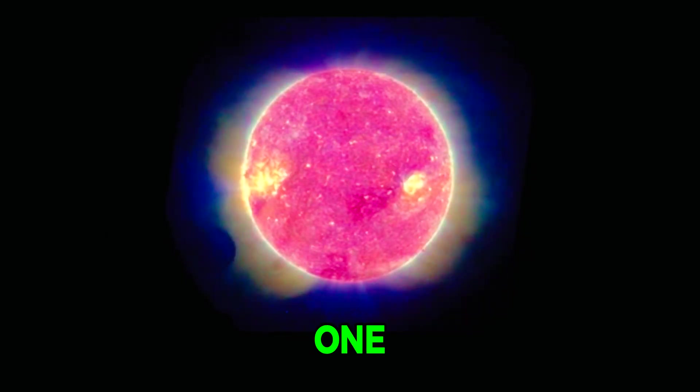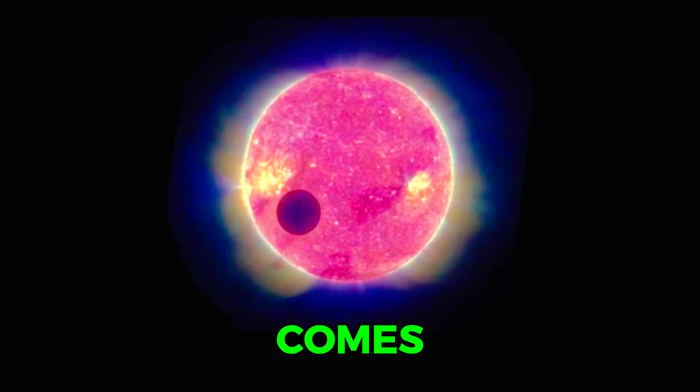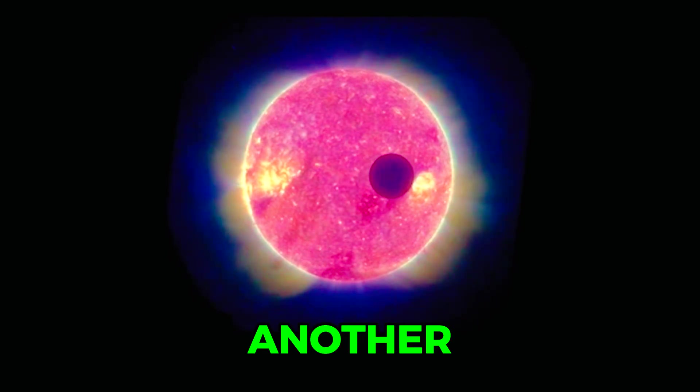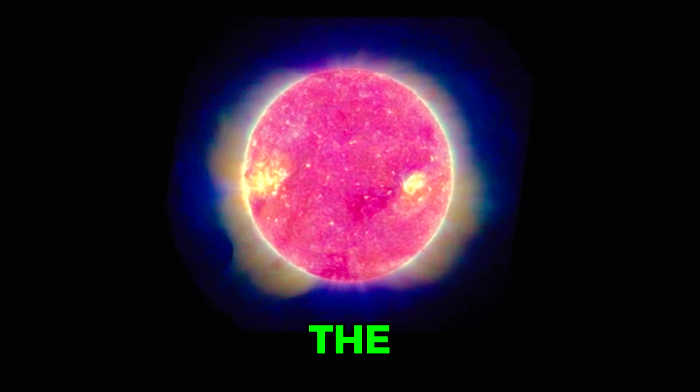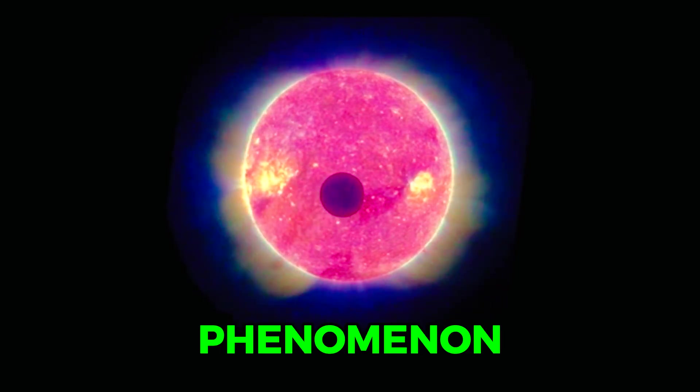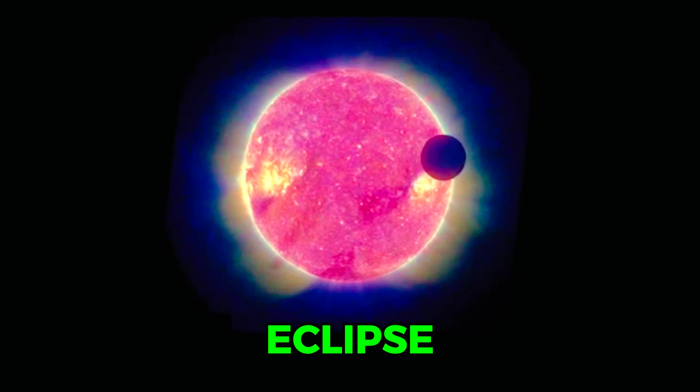When one celestial body comes between the sun and another celestial body, a shadow is cast on the second celestial body. This phenomenon is called an eclipse.